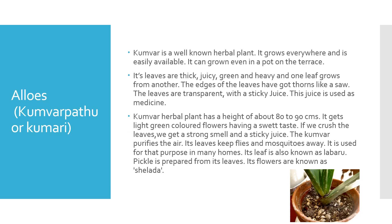The third one is Aloes, a well-known herbal plant. It grows everywhere and is easily available. It can be grown even in a pot on the terrace. Its leaves are thick, juicy, green and heavy, and one leaf grows from the other. The edges of the leaves have thorns like a saw. The leaves are transparent with sticky juice which is used as medicine. The Coomer herbal plant has a height of about 80 to 90 cm. It gets light green coloured flowers having a sweet taste. If we crush the leaves, we get a strong smell and sticky juice. The Coomer purifies the air and its leaves keep flies and mosquitoes away. Its leaves are also known as Labaru and pickle is prepared from its leaves. Its flowers are known as Chelada.